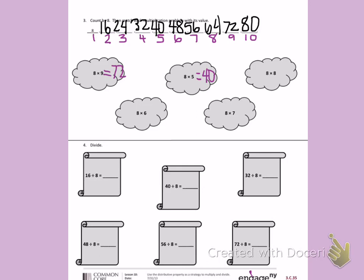8 times 8 is 8 8, that is 64. 8 times 6 is 6 8, looking at my count by, gives me 56.